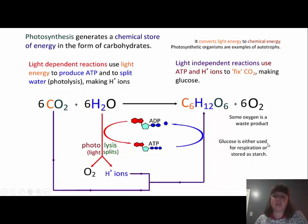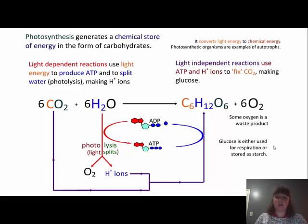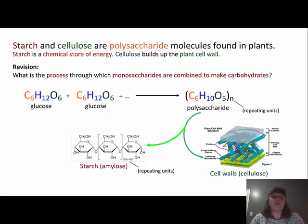Those hydrogen plus ions, the carbon dioxide, and the ATP made in the light dependent reaction are used together to make glucose. We do get oxygen as a waste product, and the glucose is either stored for later use as starch — such as in a seed — or used immediately for respiration. When we eat a plant, we're actually getting the starch that the plant has stored. Starch and cellulose are both polysaccharide molecules found in plants.